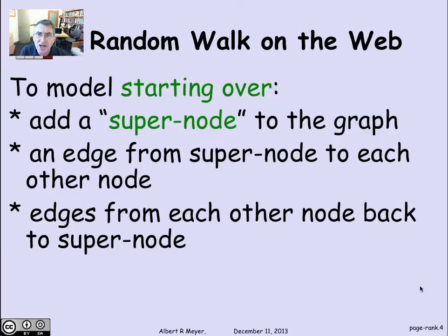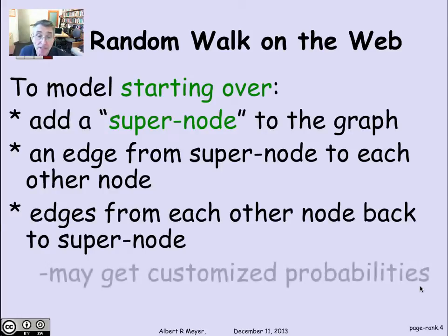To get to the super-node, we have edges back from other nodes in the graph. In the reading, we said we'd have edges back from terminal nodes that had no edges out. But that's not sufficient for PageRank to work theoretically, because even if there are no dead nodes, you might be in a clump of nodes which you can't get out of. The simplest way is to have an edge to the super-node from every vertex, so wherever you are, you can randomly decide to start over.